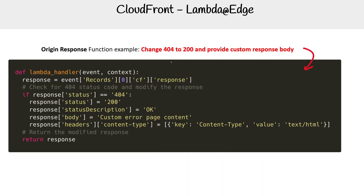And then we have the origin response. Here we're changing a 404 to 200, which is useful, but again this is functionality that CloudFront can automatically do for you. The idea is if we get a 404, return a 200, give it a custom page and some content type. So there you go.